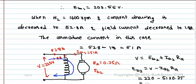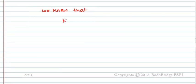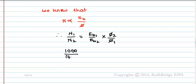We know that speed of DC shunt motor is directly proportional to back EMF and inversely proportional to flux. Therefore, N1 by N2 equals Eb1 by Eb2 into Phi2 by Phi1. We know N1 as 1000RPM by 1600RPM equals 203.55V by 207.25 into Phi2 by Phi1.